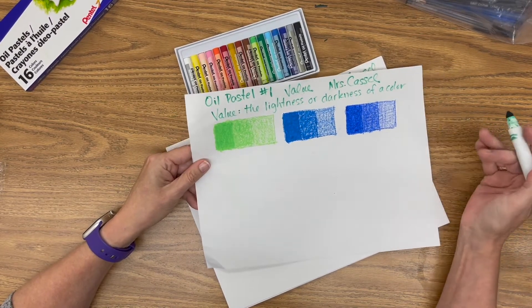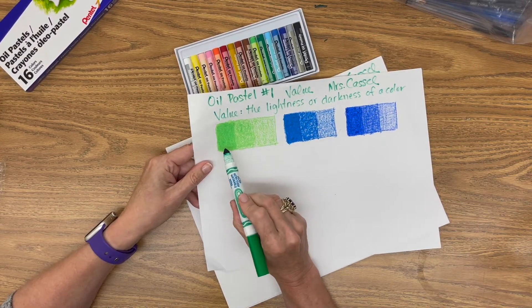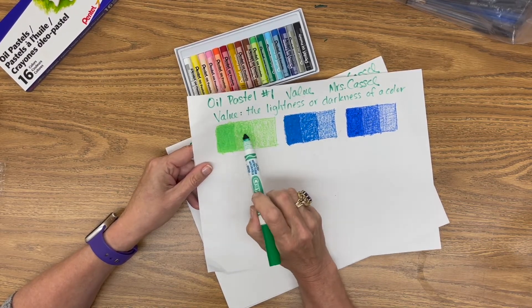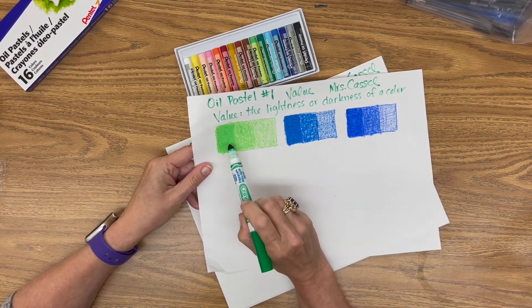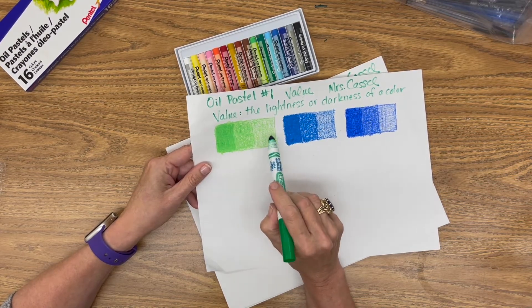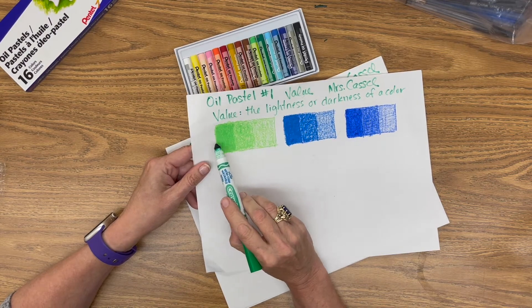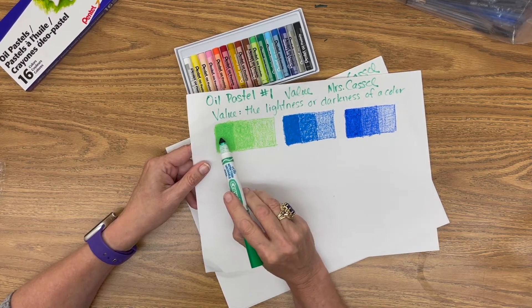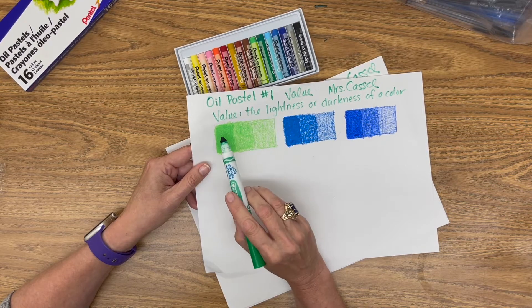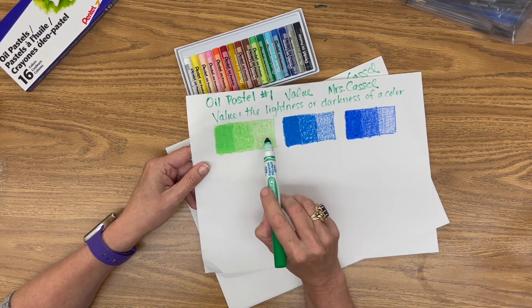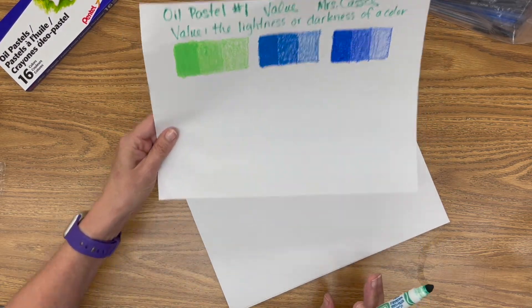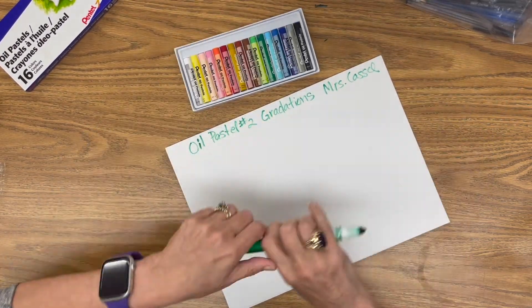Gradations involve value and a gradation is different from a value scale with steps that are clearly different from each other. We want a smooth transition from the most intense color or the darkest value that you can make with the pastel to the lightest value you can make with the pastel. But we want it to be one smooth thing.